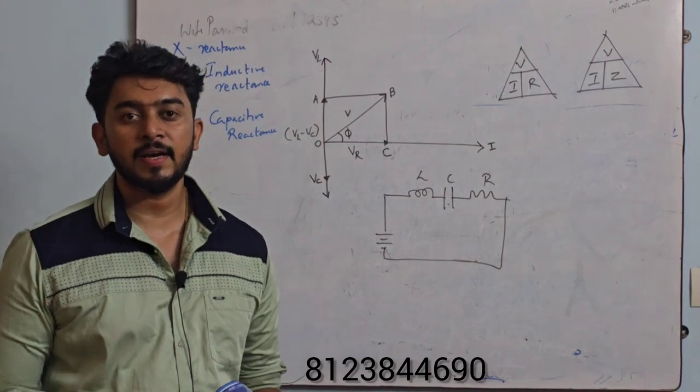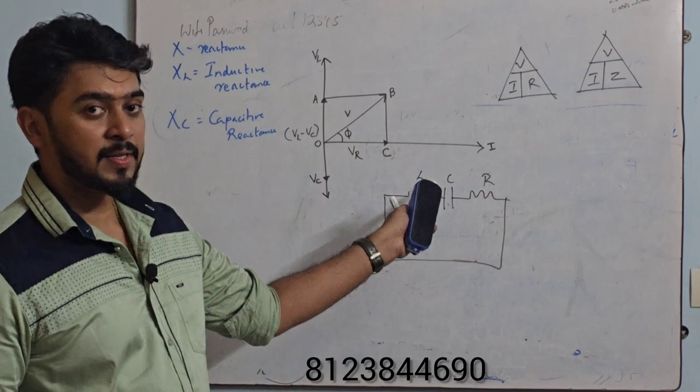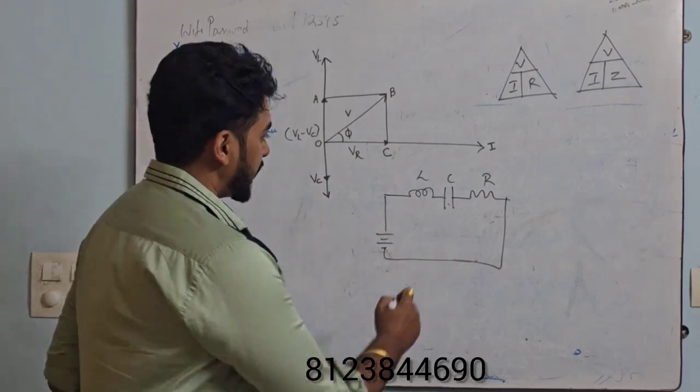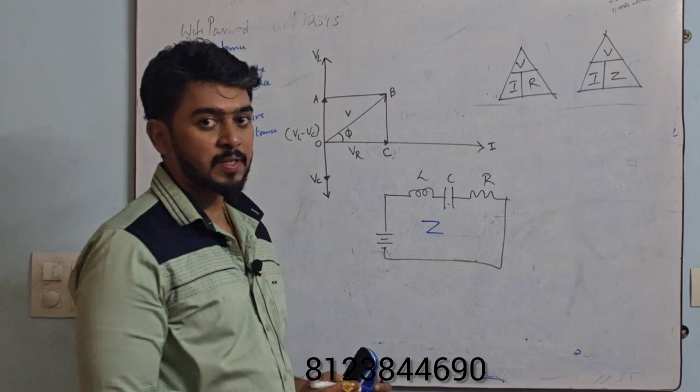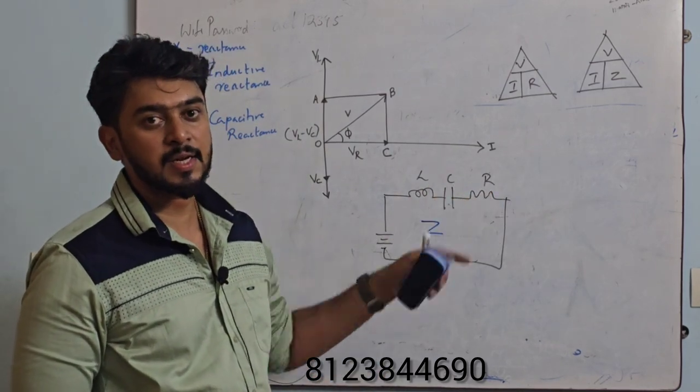Hi guys, we will be learning about alternating currents today. Today we will be learning the derivation of the LCR circuit, which is the impedance. It is a combination of inductor, capacitor, and resistor respectively.